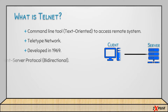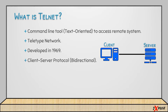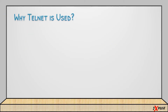Telnet follows a client-server protocol and the traffic is completely bi-directional. Telnet uses port 23, which means you have to ensure that port 23 is open on the remote system in order to access it. If port 23 is not open on the remote system, then you won't be able to access it using telnet.